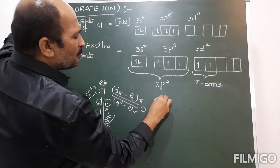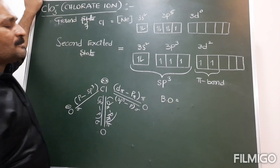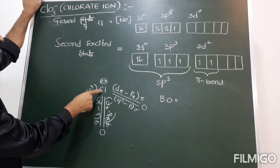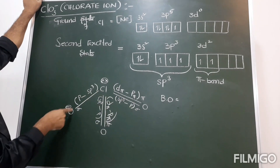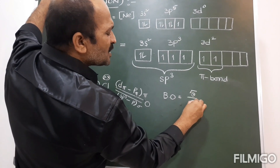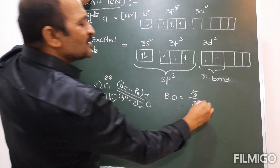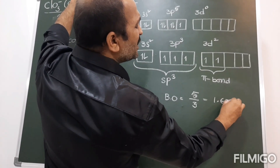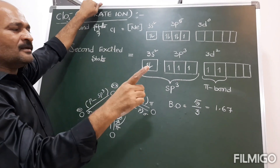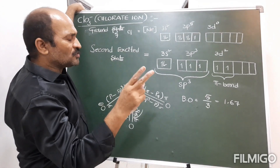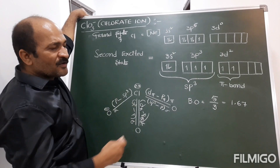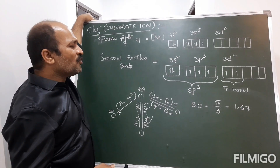For the bond order of ClO₃⁻: number of bonds formed by chlorine is 5, divided by the number of surrounded atoms which is 3, giving approximately 1.67. Summary so far — ClO⁻: bond order 1; ClO₂⁻: bond order 1.5; ClO₃⁻: bond order 1.67. Now we discuss the last molecule, ClO₄⁻.